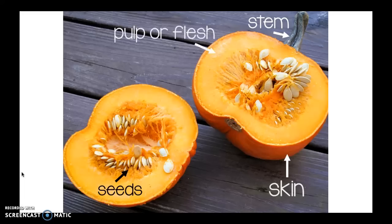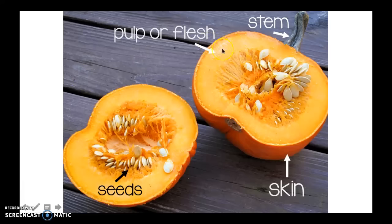The next part is the pulp, or you can call it the flesh. Remember an apple also had pulp — that was the part of the apple that we ate. We wouldn't eat this part of the pumpkin yet, but we could use it to bake something with the pumpkin. Here's the flesh or the pulp that goes all the way around.